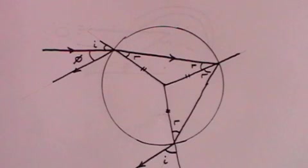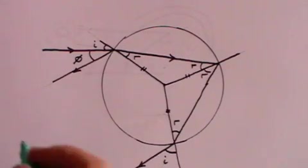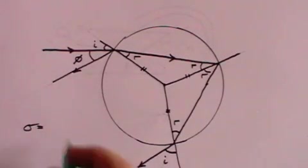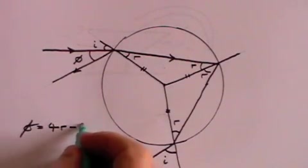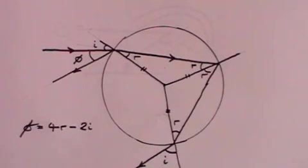And if we draw another beam in parallel, what the light has actually done is it's gone through an angle of phi. And what you can show is that phi is equal to 4r minus 2i.